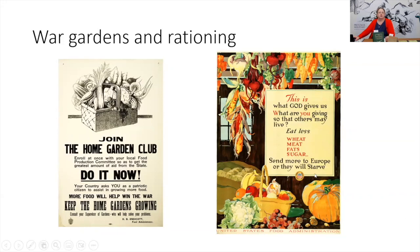The first poster is from the museum and library's collection on joining a home garden club, with directions on how to do that. The second poster, 'What God Gives Us,' is encouraging people to eat less wheat, meat, fats, and sugar so that we can send those to Europe.